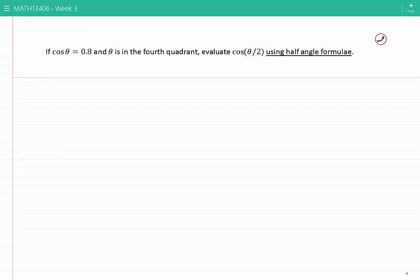If cos θ = 0.8 and θ is in the fourth quadrant, evaluate cos(θ/2) using half angle formulae. The half angle formula for cos(θ/2) in terms of cos θ is...